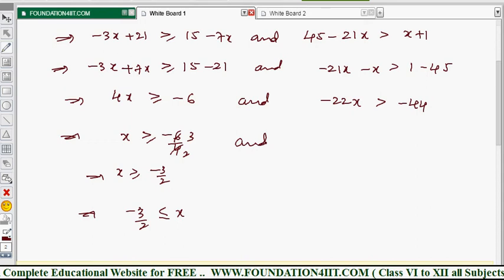And from the other side, if you cancel minus on both sides, change the inequality. So 22x less than 44, then x is less than 44 divided by 22, so x is less than 2.